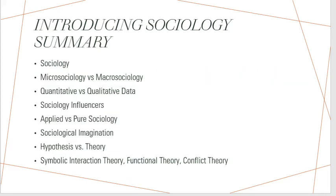In this chapter we should have learned about sociology, micro and macro sociology, quantitative versus qualitative data, the sociological influencers, applied versus pure sociology, sociological imagination, the difference between hypothesis and theory, and we went into detail on symbolic interaction theory, functional theory, and conflict theory.